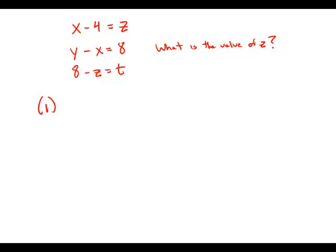So statement number one tells us that x equals seven. Well, by coincidence, I noticed that that first equation involves x and z. And if I plug in seven for x, then I'll be able to solve for z.